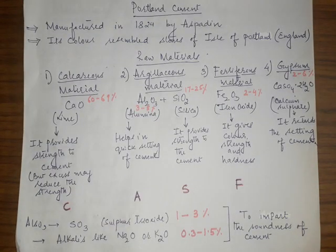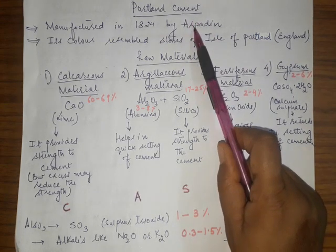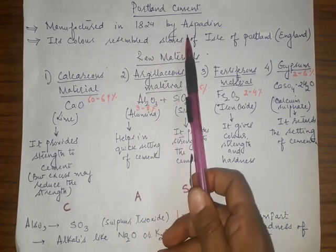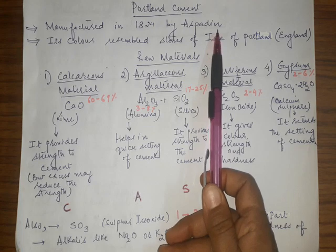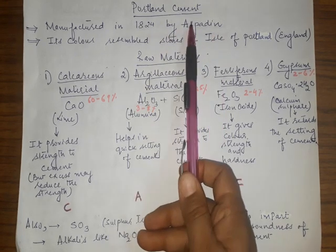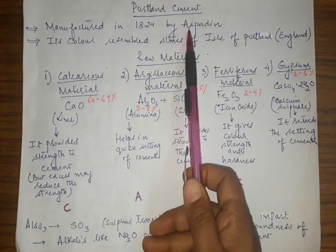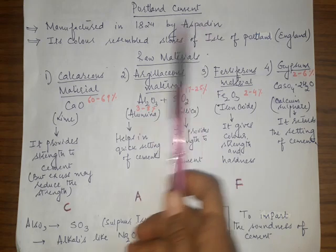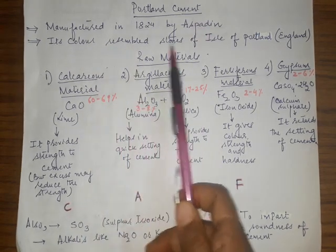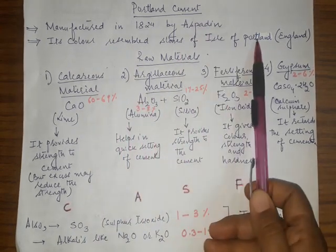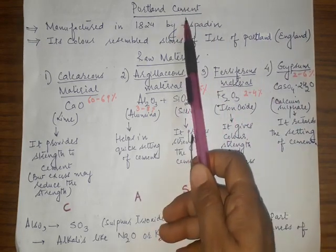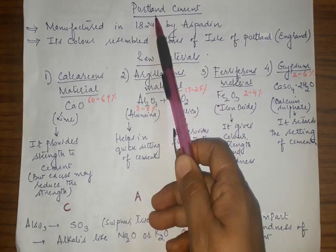Portland cement was first manufactured in 1824 by a mason named Aspidin. He accidentally mixed the raw materials and subjected them to very high temperature, and the material obtained had a colour resembling the stone of the Isle of Portland in England. Hence the cement obtained got the name Portland cement.